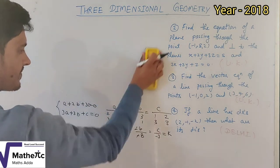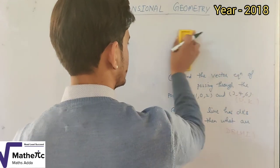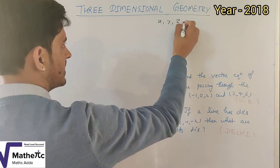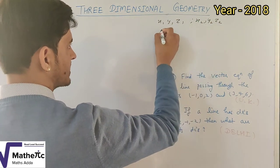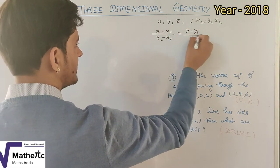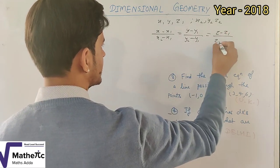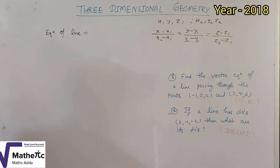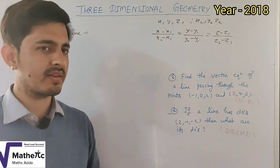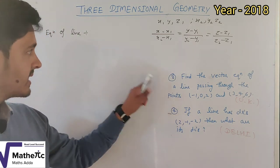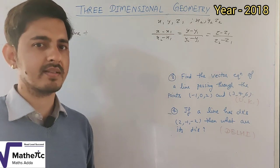Now we come to the third question: find the vector equation of a line passing through two given points. If two points (x1, y1, z1) and (x2, y2, z2) are given, the Cartesian equation of the line is: (x − x1)/(x2 − x1) = (y − y1)/(y2 − y1) = (z − z1)/(z2 − z1). I am solving it a different way — first finding the Cartesian equation, then converting to vector form, so both answers can be obtained.